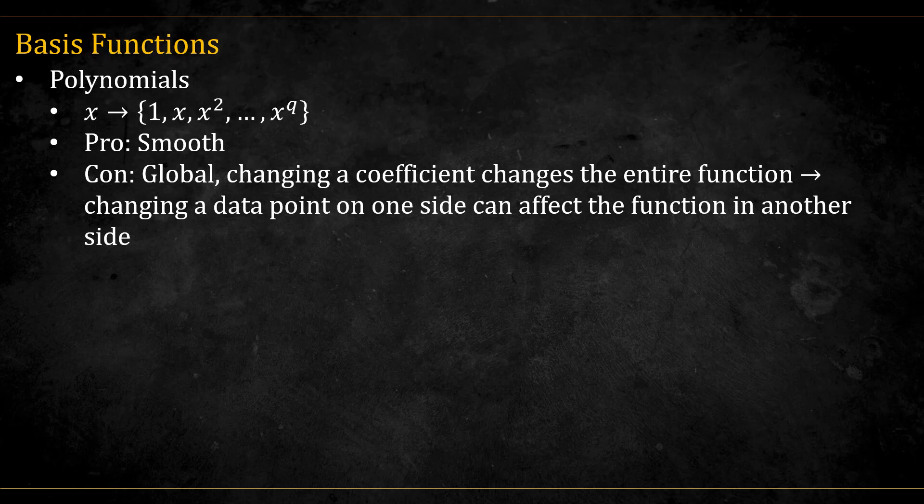Now one type of basis expansion is using polynomials. That is, instead of only using x, use also x-squared, x-cubed, etc. Normally we will use orthogonal polynomials to avoid multicolinearity issues. The pro of using this method is that polynomials are very smooth functions. The downside is that these base functions are global. Changing the coefficient of one base, say of x-squared, changes the entire function. And that is also true for fitting these polynomials to data. Changing a data point on one side of the scatter plot can affect the function in another side.